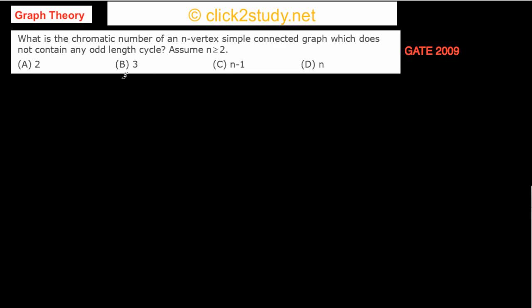The next question asks: what is the chromatic number of an n-vertex simple connected graph which does not contain any odd-length cycle? The chromatic number is the minimum number of colors needed to color the vertices of a graph such that no two adjacent vertices have the same color.